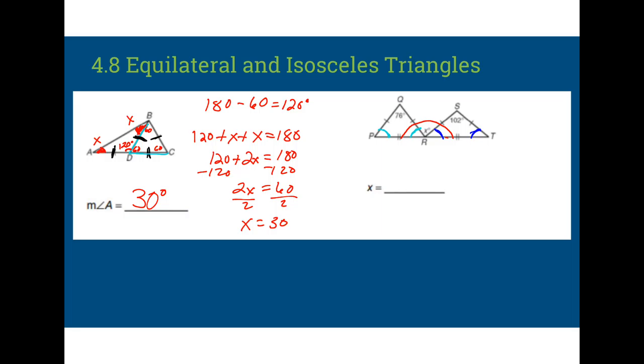So let's set up our first equation. So 76 plus X plus X is equal to 180. Go ahead and pause the video. Try and solve that on your own. And I get X equals 52. So I know that this angle, QRP right here, is going to be 52 degrees.